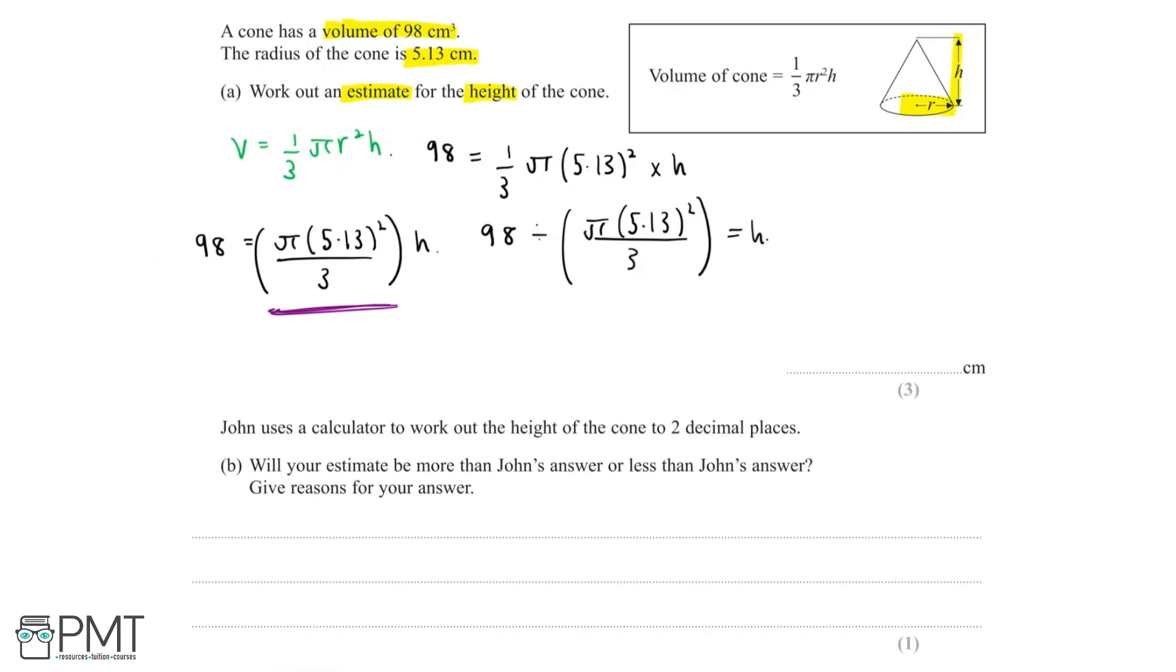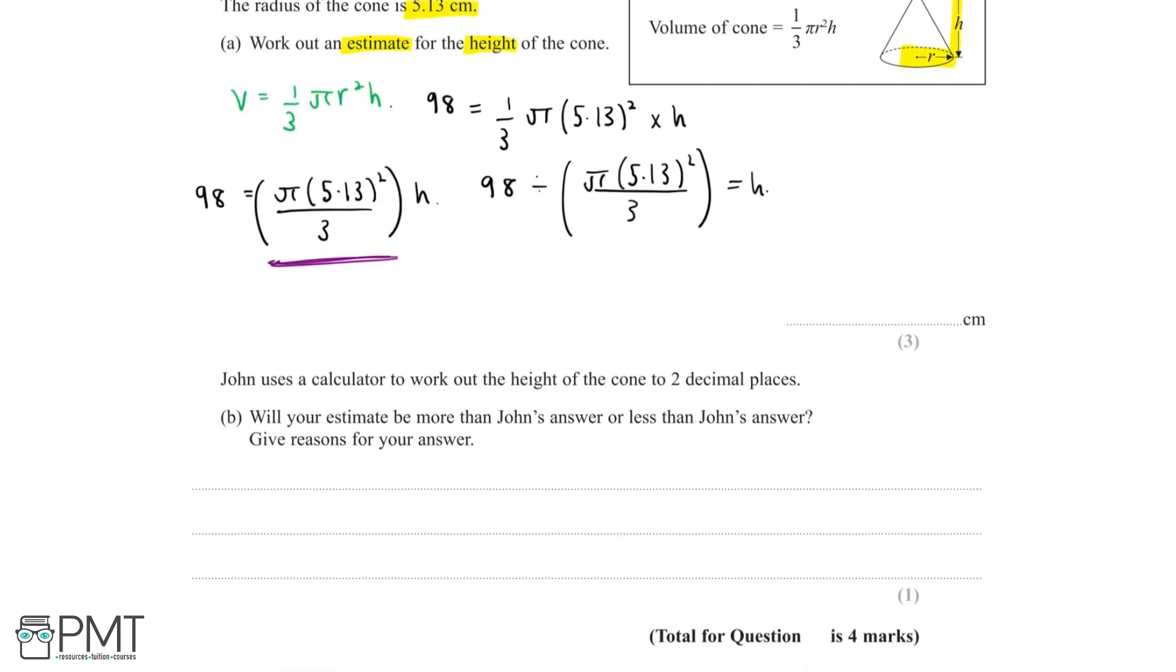When we divide by a fraction, we can do this by flipping the fraction that's being divided and changing the division sign to a multiplication sign. So we'll say 98 multiplied, and then when we flip the fraction, we'll get 3 over π (5.13)² equals height. Then let's simplify: 98 times 3 over π (5.13)² equals height.